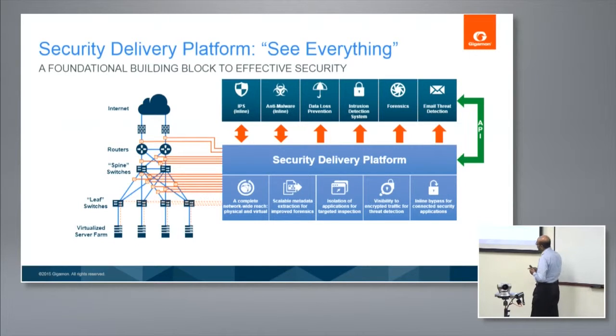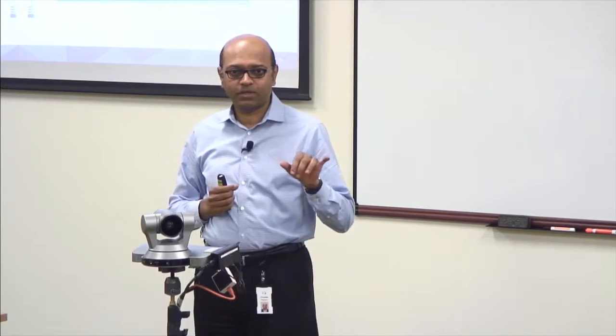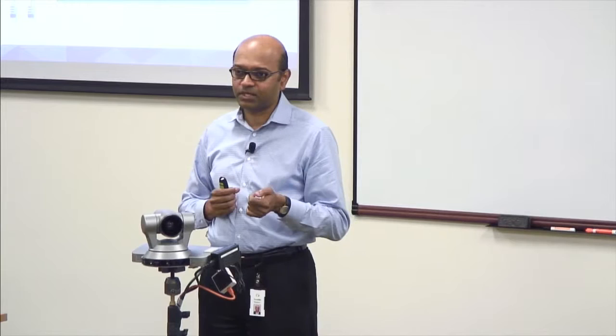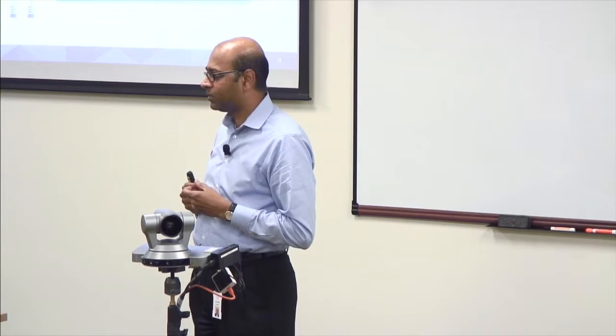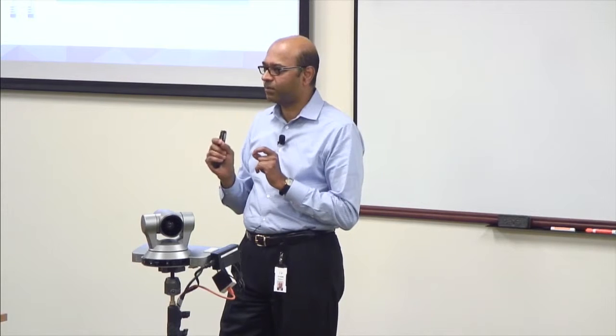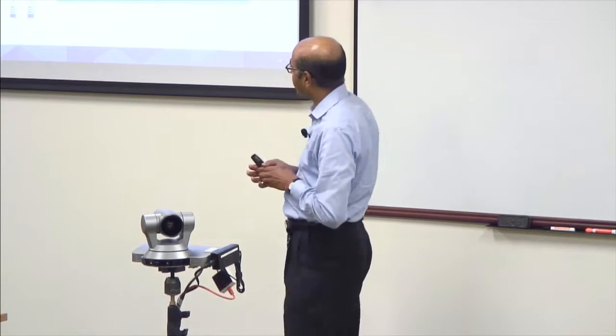The second component is scalable metadata for extraction and improved forensics. This covers what happens when somebody clicks on a phishing link — perhaps an agent gets installed on your device and communication happens to an external actor's website. That's a very slow trickle of traffic, but can you catch that before it turns into data exfiltration? Catching it as soon as possible is a key aspect.